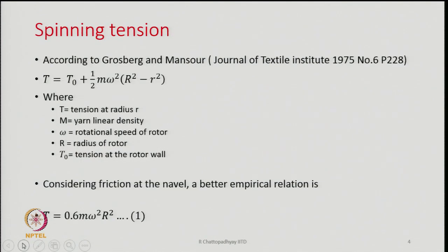Spinning tension has been theoretically modeled by some researchers. In work done by Grossberg and Mansoor, the equation states that the tension at any point on the yarn arm at distance r from the rotor center is: T = T₀ + ½·m·ω²·(R² − r²), where capital R is the radius of the rotor, ω is the rotational speed, m is the yarn linear density, and T₀ is the tension at the rotor wall.